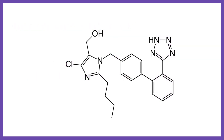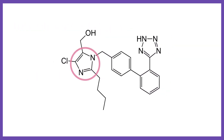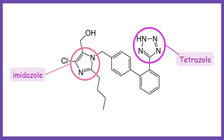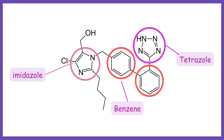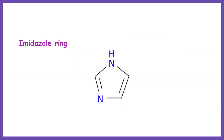The ring structure present in most angiotensin receptor blockers, ARBs, is an imidazole ring. You can also find a tetrazole ring as well as benzene rings in the given structure. The imidazole ring is a five-membered ring with two nitrogen atoms, and it plays a crucial role in the pharmacological activity of ARBs by interacting with the angiotensin-2 receptors.